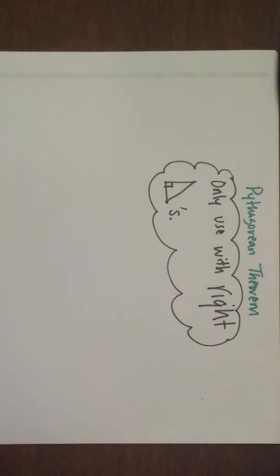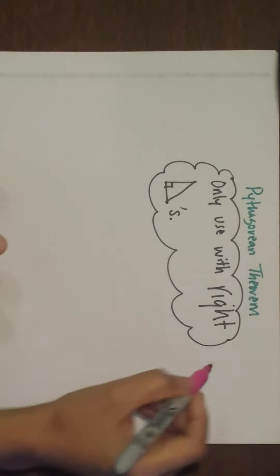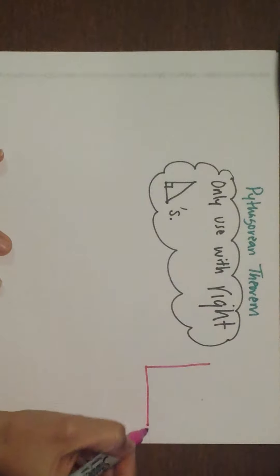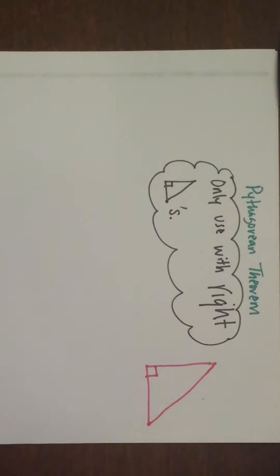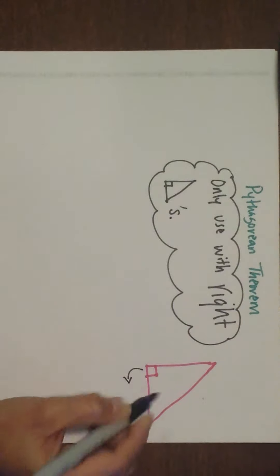An example would look like this - it is a right triangle. What makes it a right triangle is that it has this box or a 90 degree angle, otherwise known as a right angle.